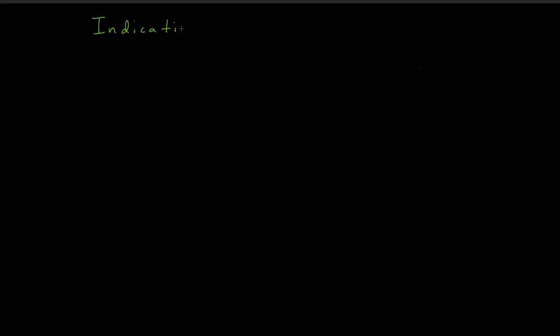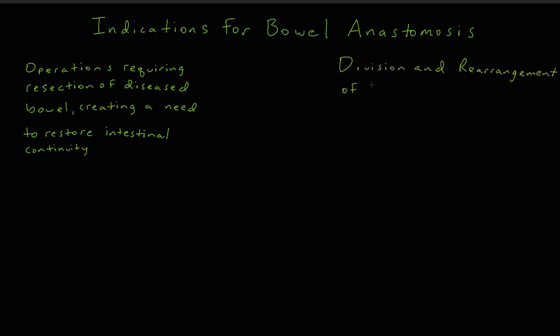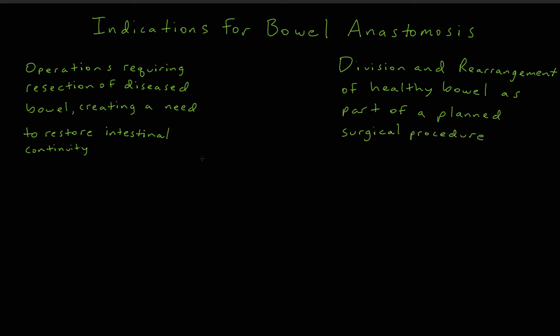So why do we do bowel anastomosis? The indications for bowel anastomosis can be conceptualized using two broad categories: operations requiring resection of diseased bowel, and operations requiring division and rearrangement of healthy bowel as part of a planned surgical procedure. Operations that require resection of diseased bowel disrupt the normal linear continuity of the gastrointestinal tract. In these cases, a bowel anastomosis is used to restore intestinal continuity.